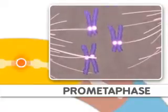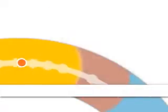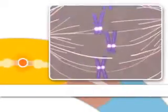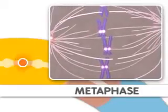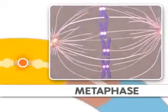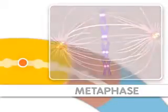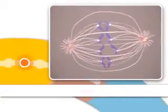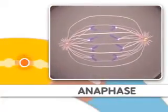This step is followed by metaphase, where the chromosomes align. Metaphase is followed by anaphase, where the chromosomes separate.